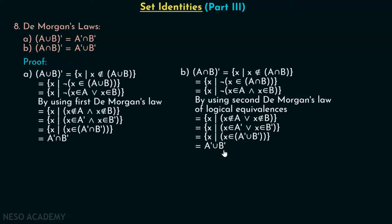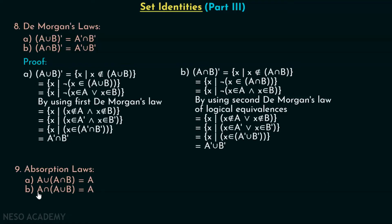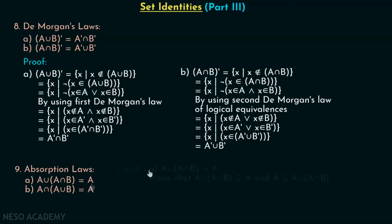Next, we will discuss absorption laws. There are two laws under this category. One is A union A intersection B, which must be equal to A. And A intersection A union B must be equal to A. These are the absorption laws. Let's try to prove them one by one. Let's prove the first law: A union A intersection B is equal to A.